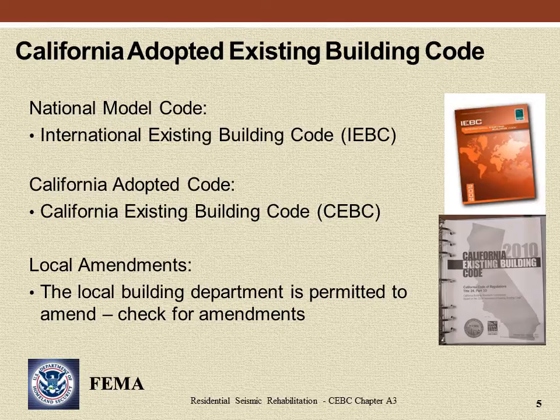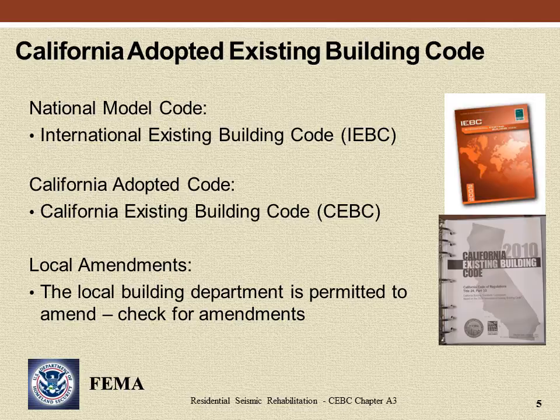California also adopts two portions of the International Existing Building Code: Chapter A1, addressing seismic rehabilitation of unreinforced masonry structures, and Chapter A3, addressing dwelling anchorage to foundations and cripple wall bracing. Chapter A3 forms the basis of this training.